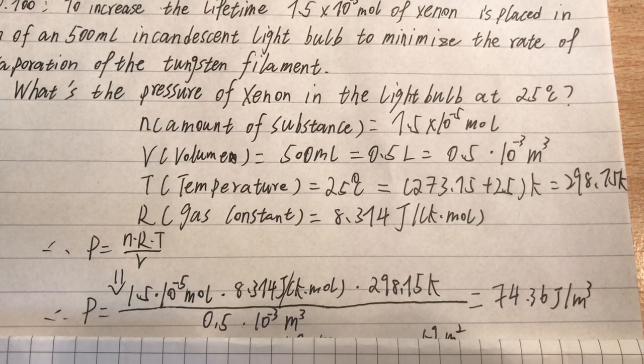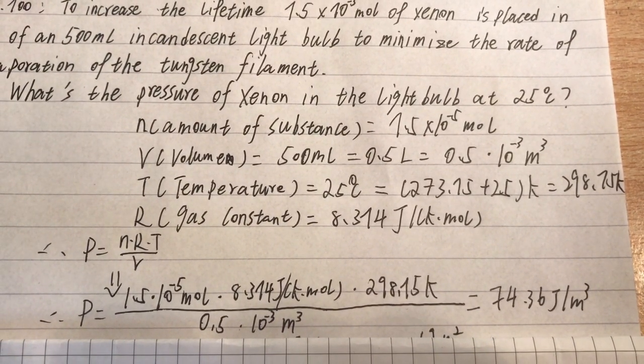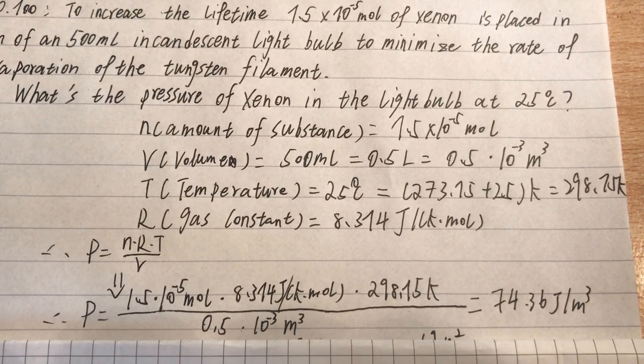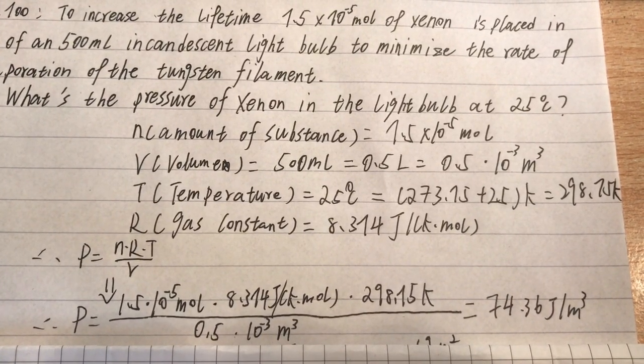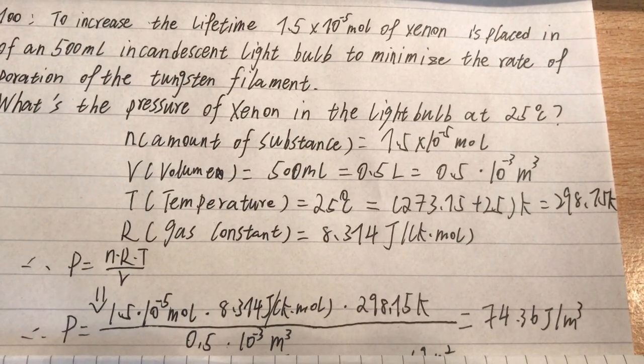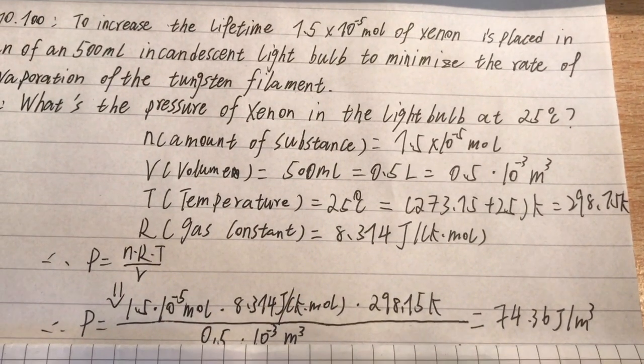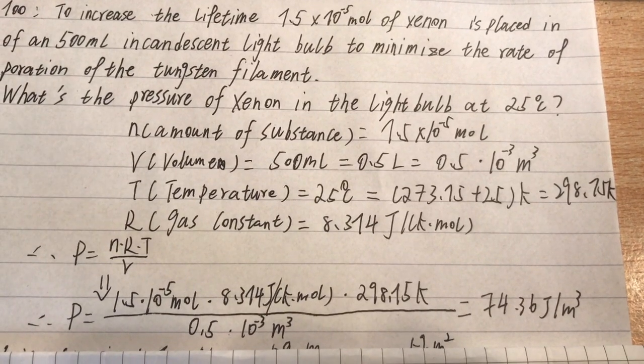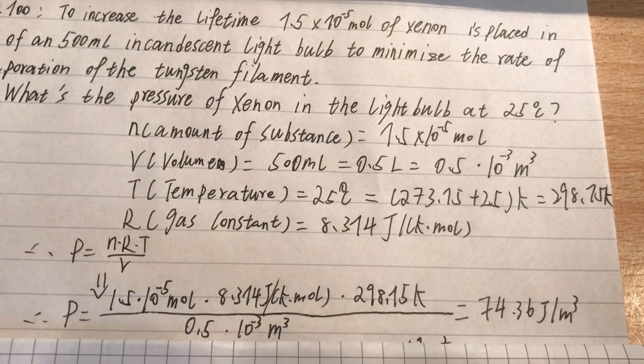Here is the calculation. The formula that I used is P is equal to the product of n, R, and T over the volume. So, as you can see, P is equal to 1.5 times 10 to the power of minus 5 mole, multiplied by 8.314 Joules per Kelvin mole, multiplied by 298.15 Kelvin, over 0.5 times 10 to the power of minus 3 cubic meter. So, the answer is 74.36 Joules per cubic meter.